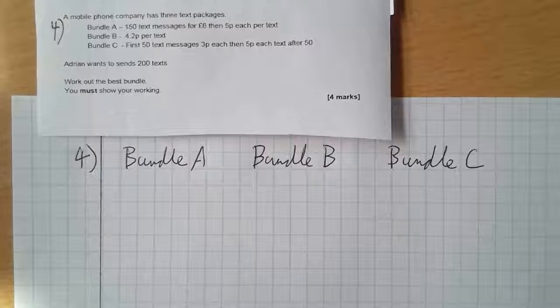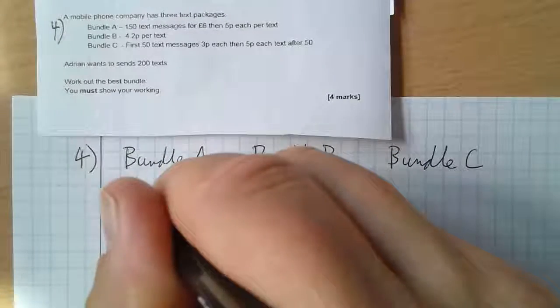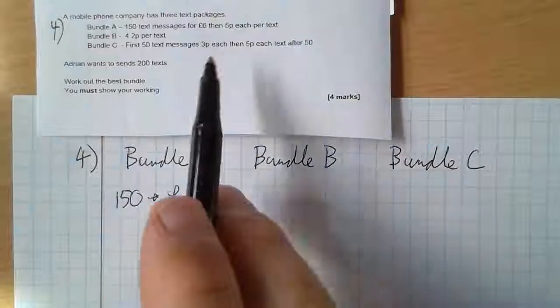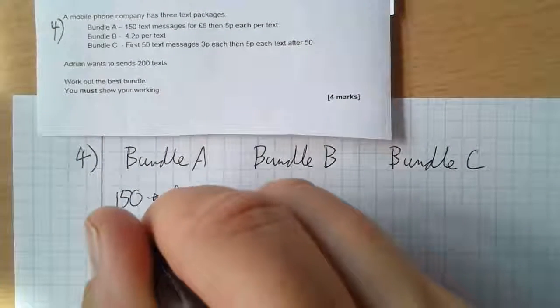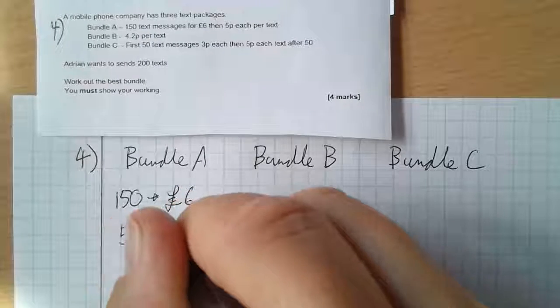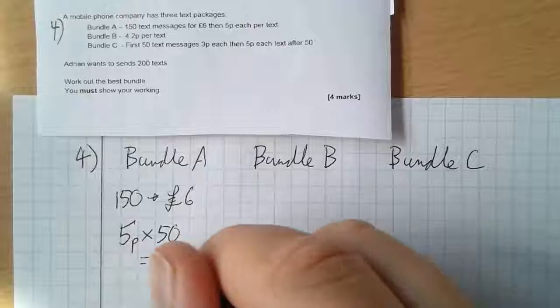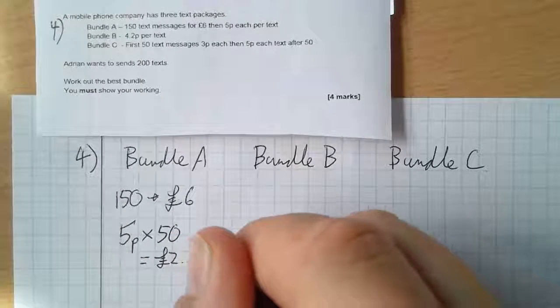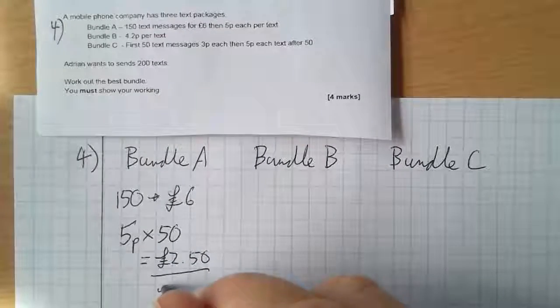So Bundle A: I've got 150 texts, and the cost of that would be £6, and then 5p per text after that. So I've then got 5p times 50 of them, so that is 250p or £2.50. Okay, so my total cost here must be £8.50.